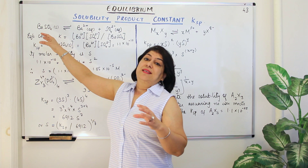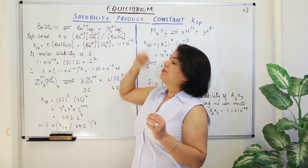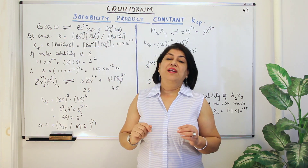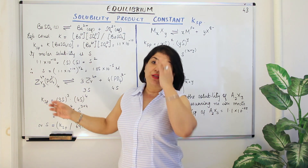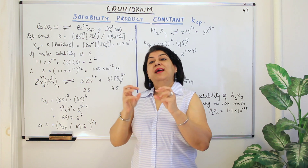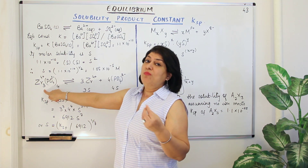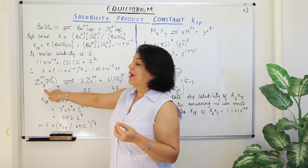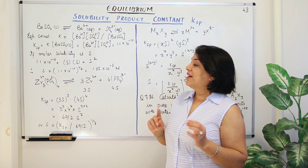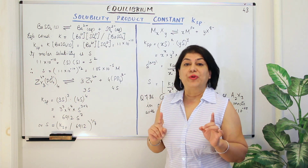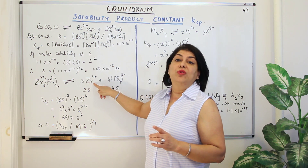This was a simple case because we had only one mole of barium and one mole of sulphate being formed. What about a salt where the stoichiometry of the formula has a different number of moles of ions? For example, zirconium phosphate. The formula for zirconium phosphate is Zr₃(PO₄)₄, so four phosphate ions and three zirconium ions will be formed.